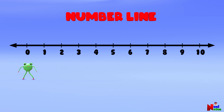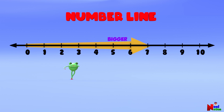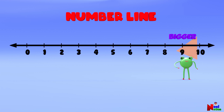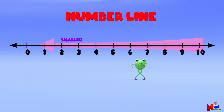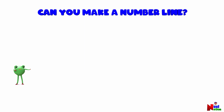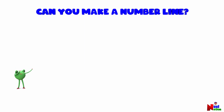For now, let's look at the numbers from 0 to 10 on the number line. The numbers on the number line get bigger, or increase, as we move forward from left to right. And the numbers get smaller, or decrease, as we move backwards from right to left. Can you make a number line? Yes, I can do it!